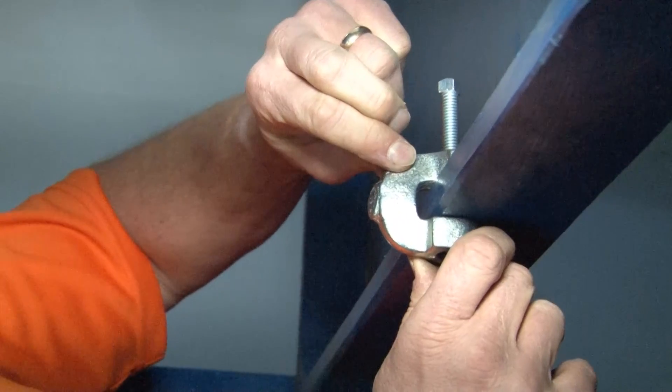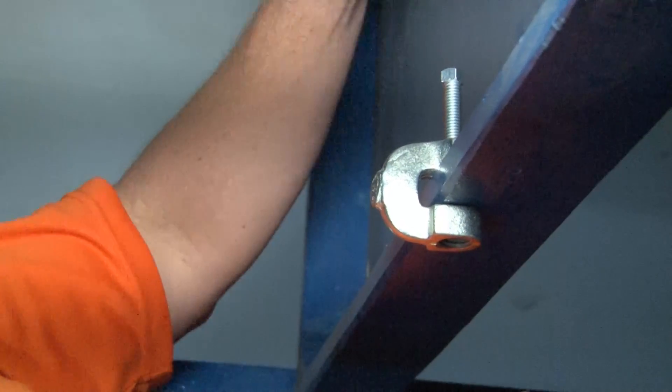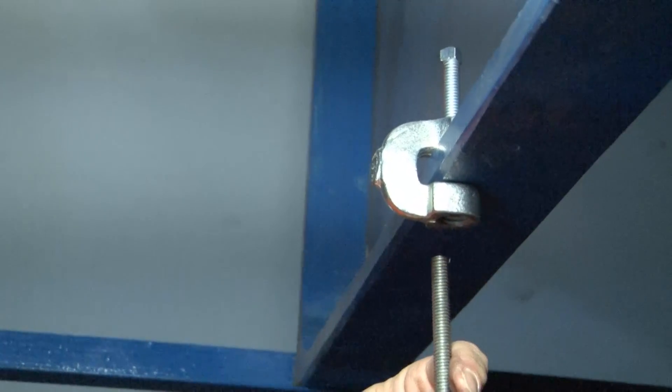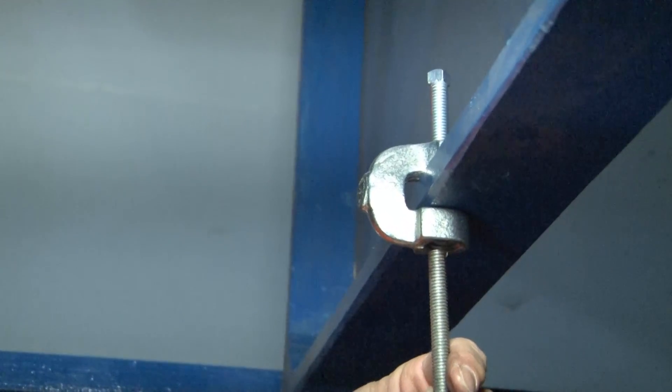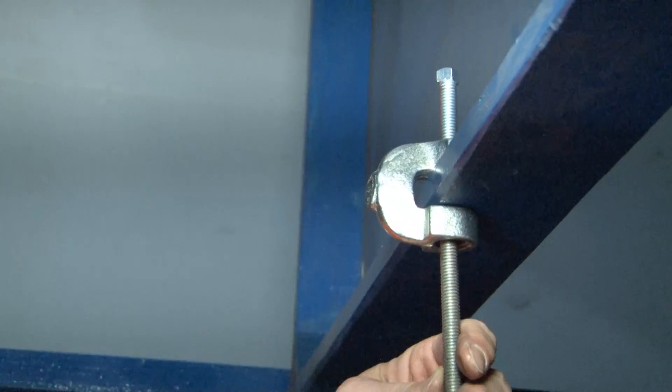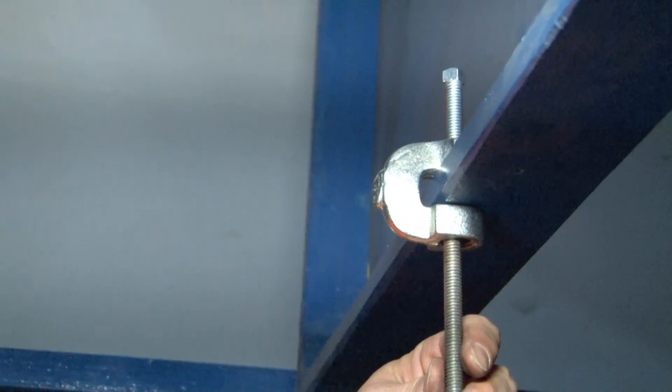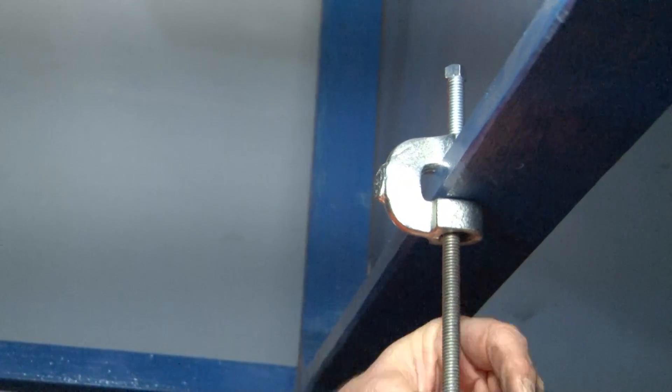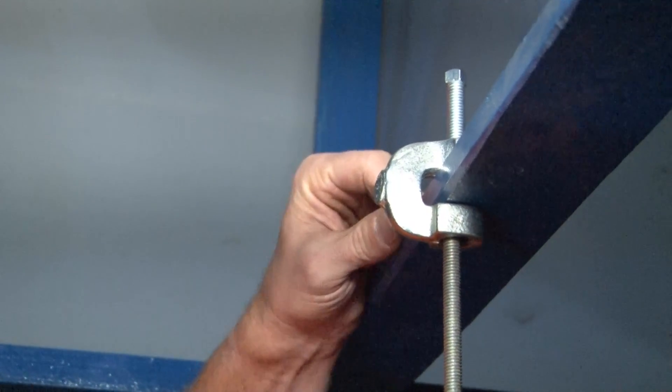Once it's securely on there, you're now ready to take your three-eighths inch, half-inch, five-eighths, or three-quarter inch threaded rod, insert it into the beam, and screw it into place until it hits directly on the bottom of the beam.